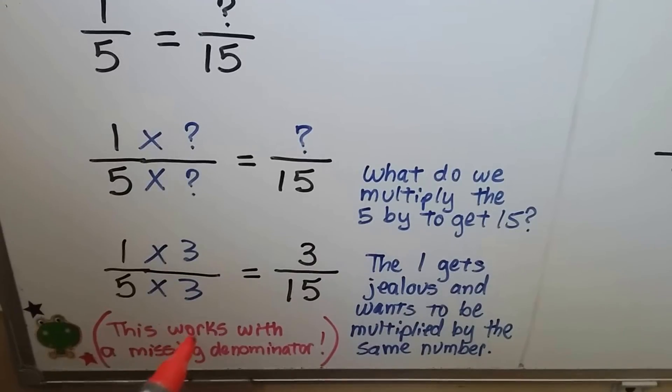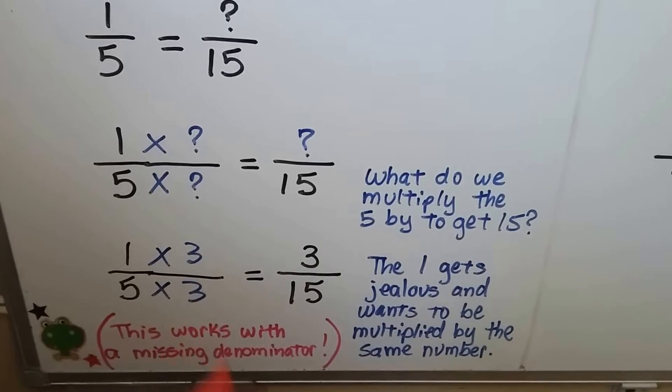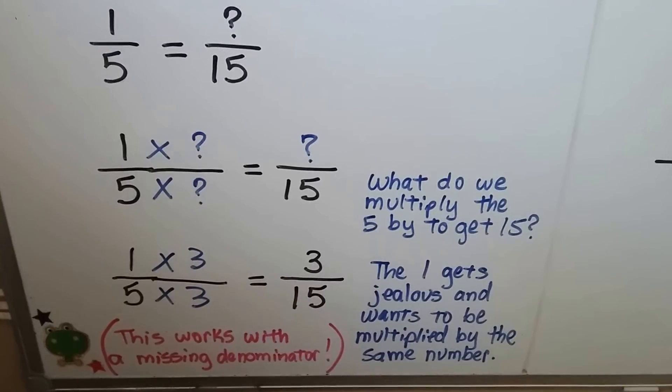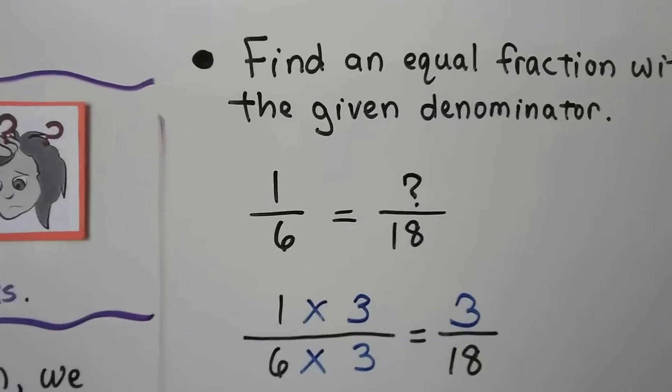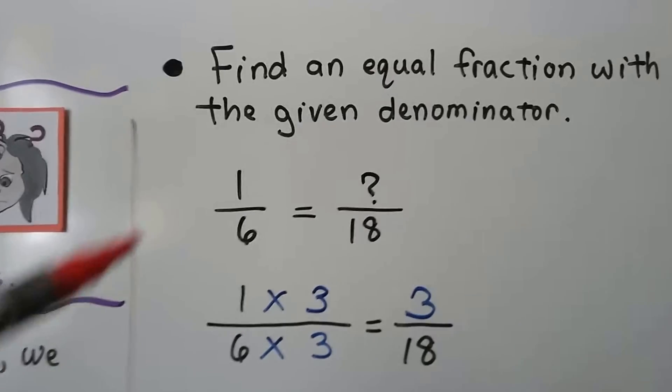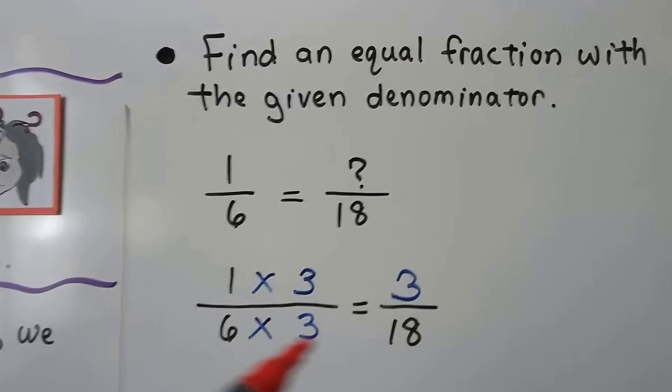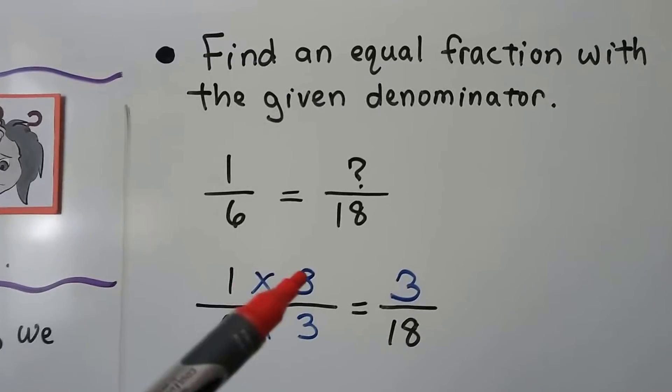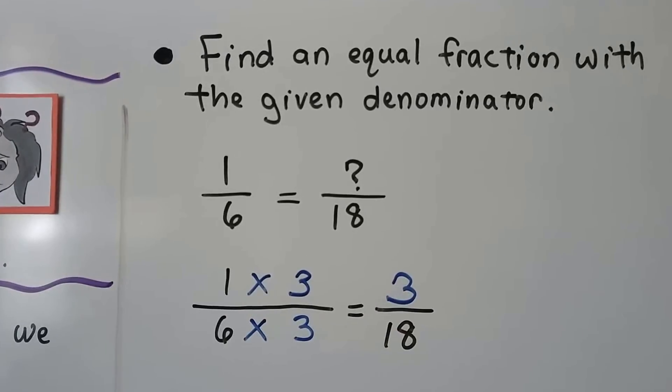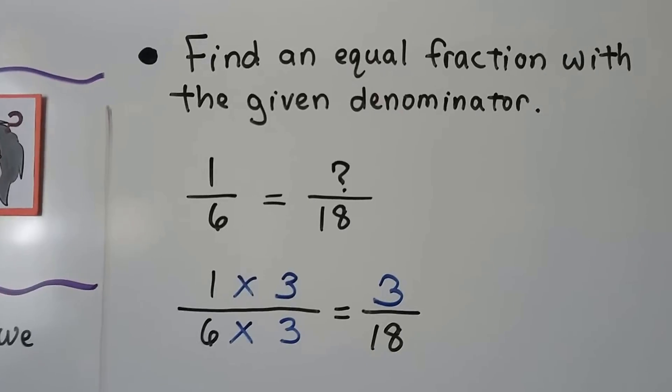Now this will also work if the numerator is there and the denominator is missing. We can do the same thing. So it says find an equal fraction with the given denominator. We have 1/6 equals something eighteenths. Well, 6 times 3 is 18. So we need to multiply the numerator by 3 and we get 3/18. That's an equivalent fraction to 1/6.